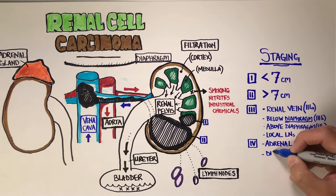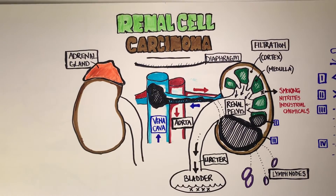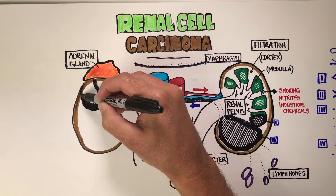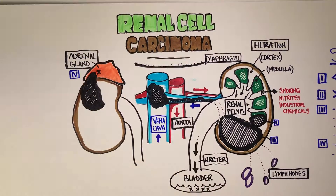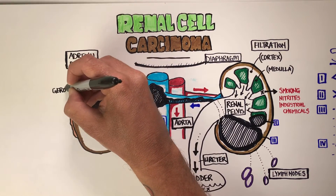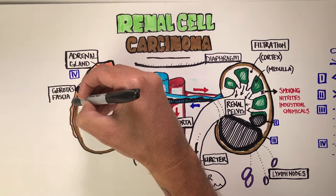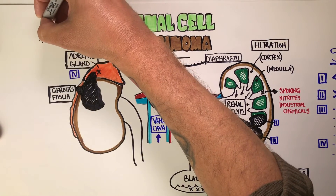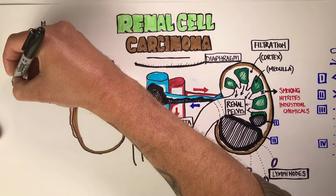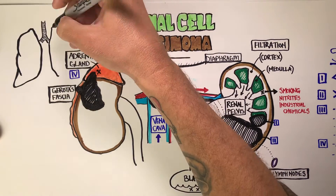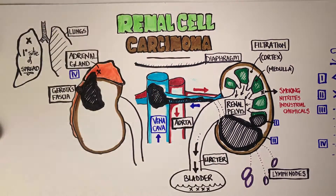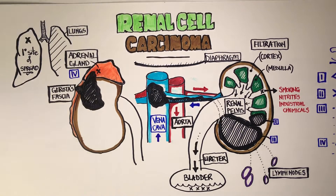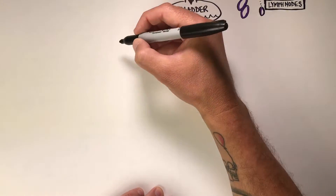Stage four involves distant sites. One site considered stage four is actually very close by: if the tumor spreads through the kidney's capsule into the adrenal glands, that is stage four. There is also a fine layer of connective fat called Gerota's fascia — spread into that is also stage four. The primary organ for metastatic spread is the lungs, so at early diagnosis you will be getting imaging of the lungs.